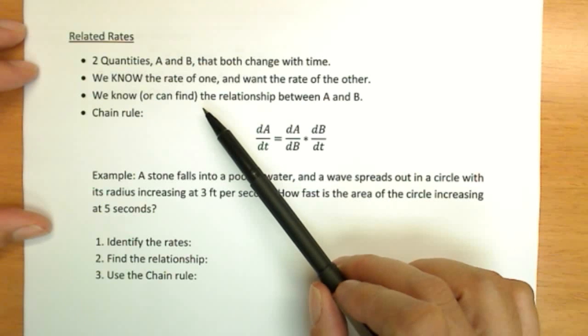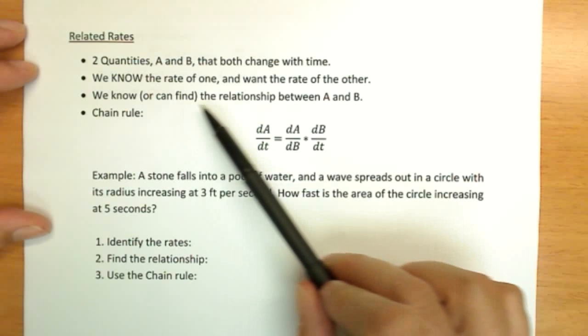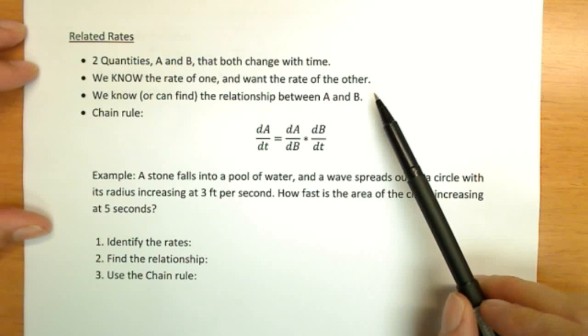And we know, or we can find, maybe we have to look it up or think about it for a while, but we can always find some relationship between the two quantities A and B.